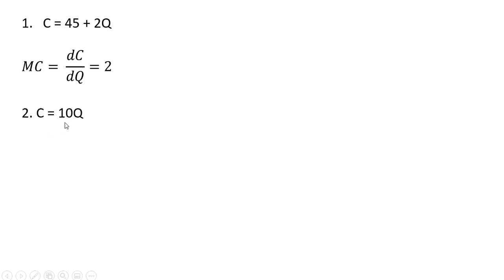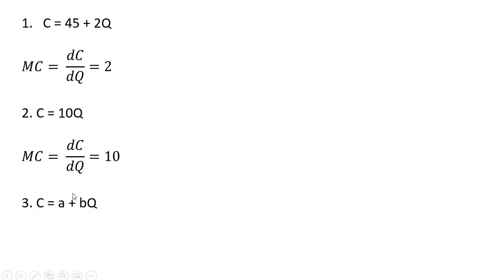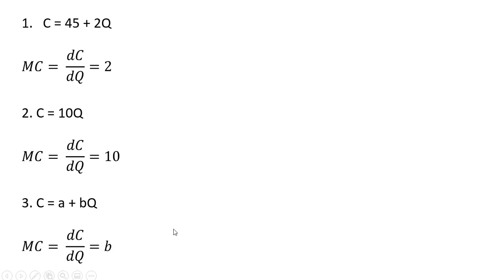Example 2. Total cost equals 10q. Marginal cost is just going to be 10, constant at 10. And in general, if the total cost equation equals a plus bq, marginal cost will just be that coefficient in front of the q term, in this case b.